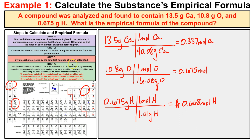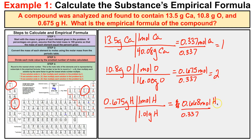Step three: divide each mole value by the smallest number of moles calculated. The smallest value here is 0.337, so we divide all three values by 0.337. We end up with 1 for calcium, 2 for oxygen, and 1.98 for hydrogen — which we can round up to 2 since it's that close to a whole number. These whole numbers — 1, 2, and 2 — are the subscripts for each element.